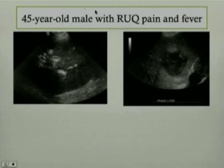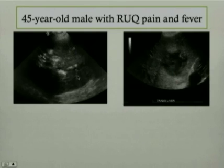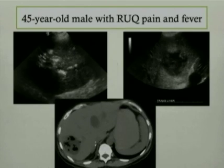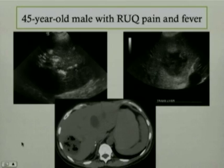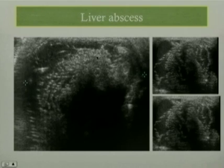Moving on to the next case — a 45-year-old male with right upper quadrant pain and fever. Two images from the liver demonstrate a very heterogeneous appearance of the liver and multiple echogenic foci with reverberation artifact. Another image from the same patient demonstrates a heterogeneous fluid collection with very irregular shaggy walls and some echogenic foci and reverberation artifact. This finding on ultrasound should raise suspicion for the presence of air within the liver, hence liver abscess. CT demonstrated a fluid collection in the right hepatic lobe with multiple foci of air, diagnostic of a liver abscess. Another example of liver abscess on ultrasound demonstrates echogenic foci occupying almost the entire right hepatic lobe with reverberation artifact.